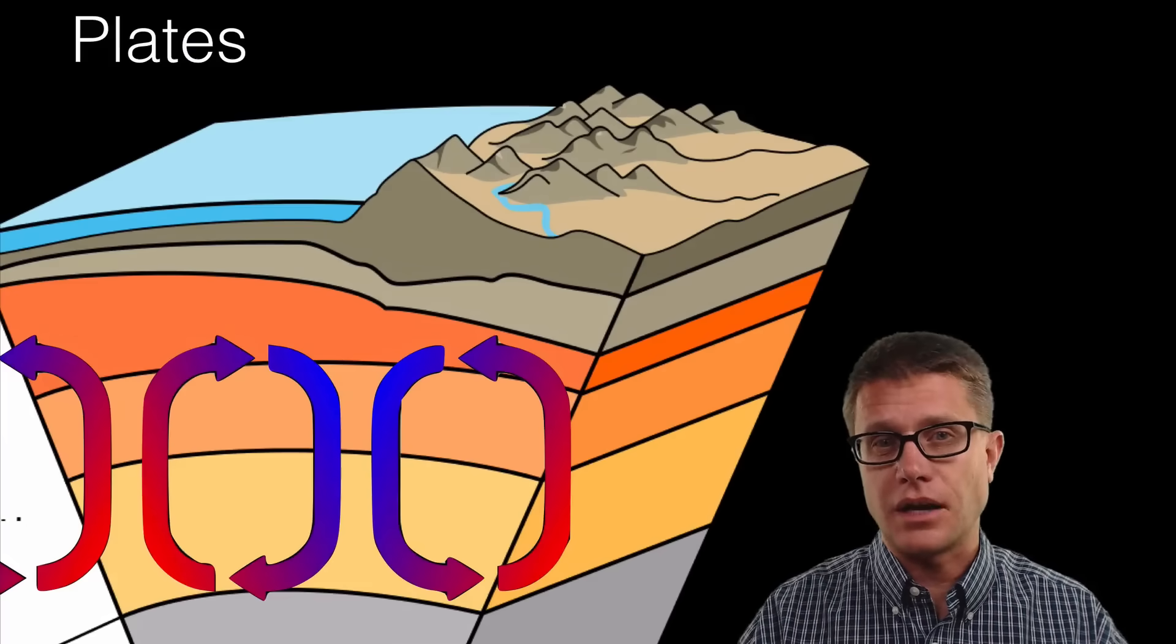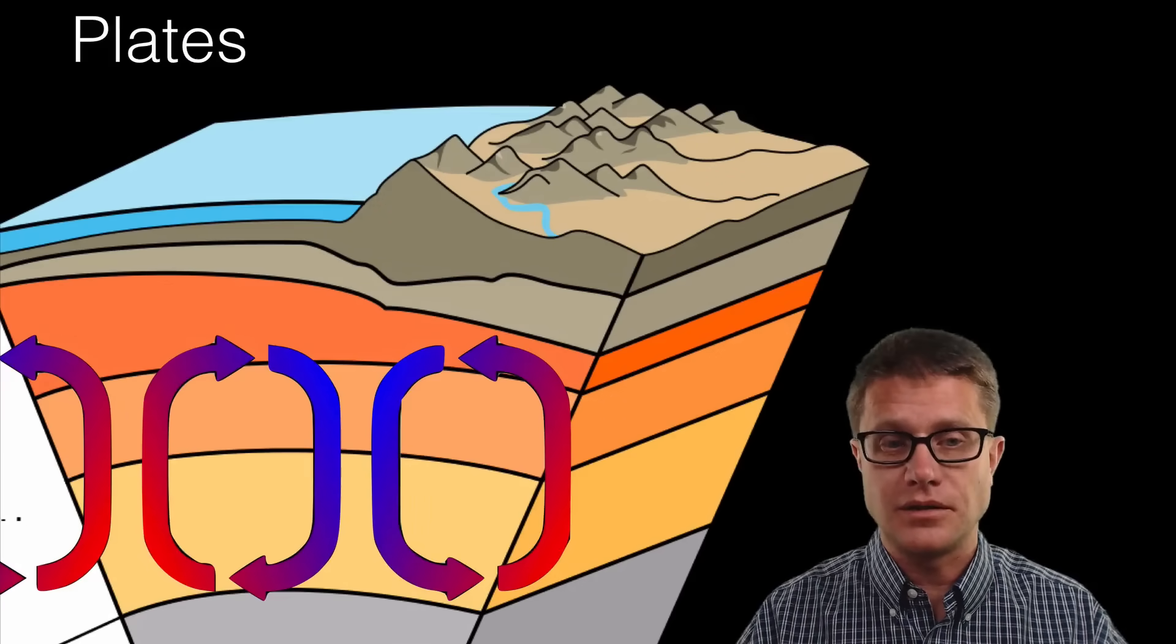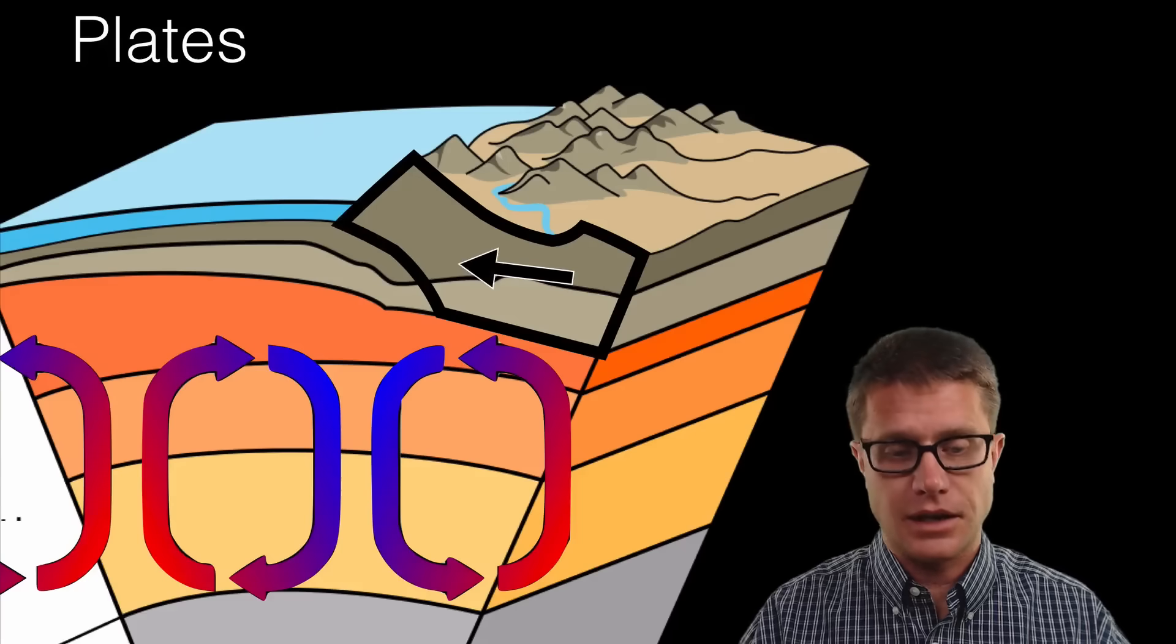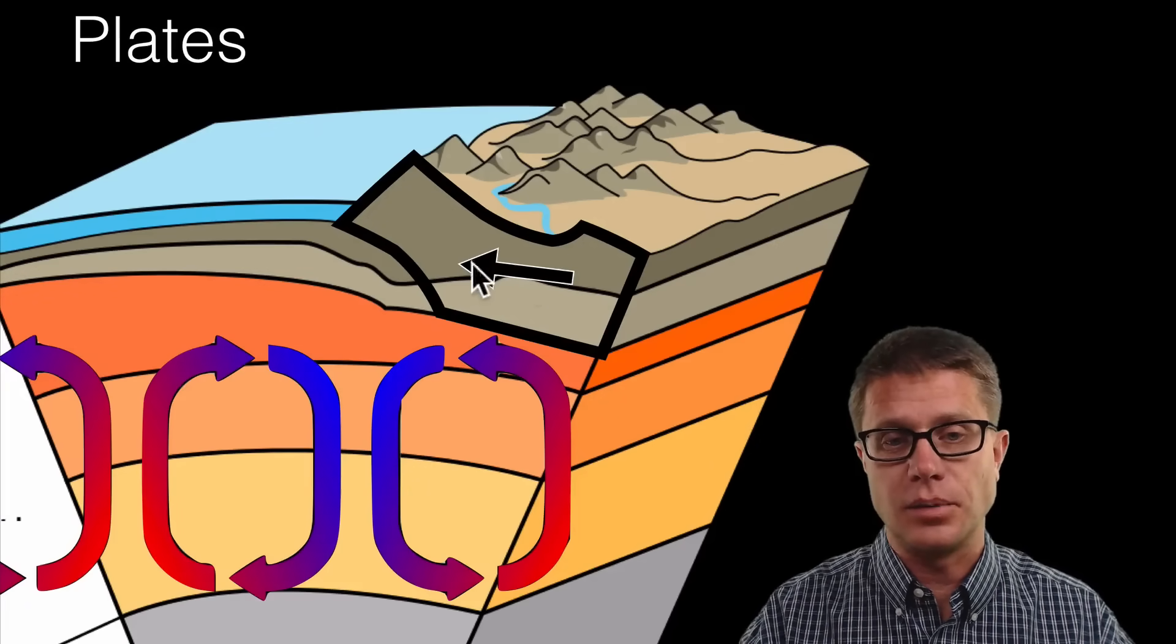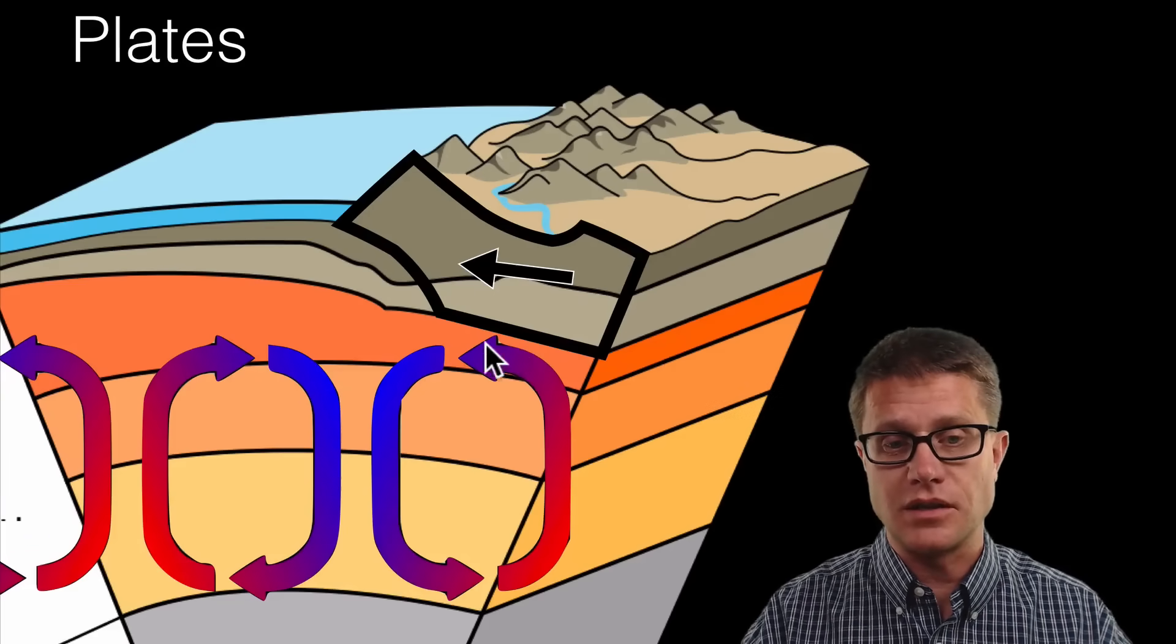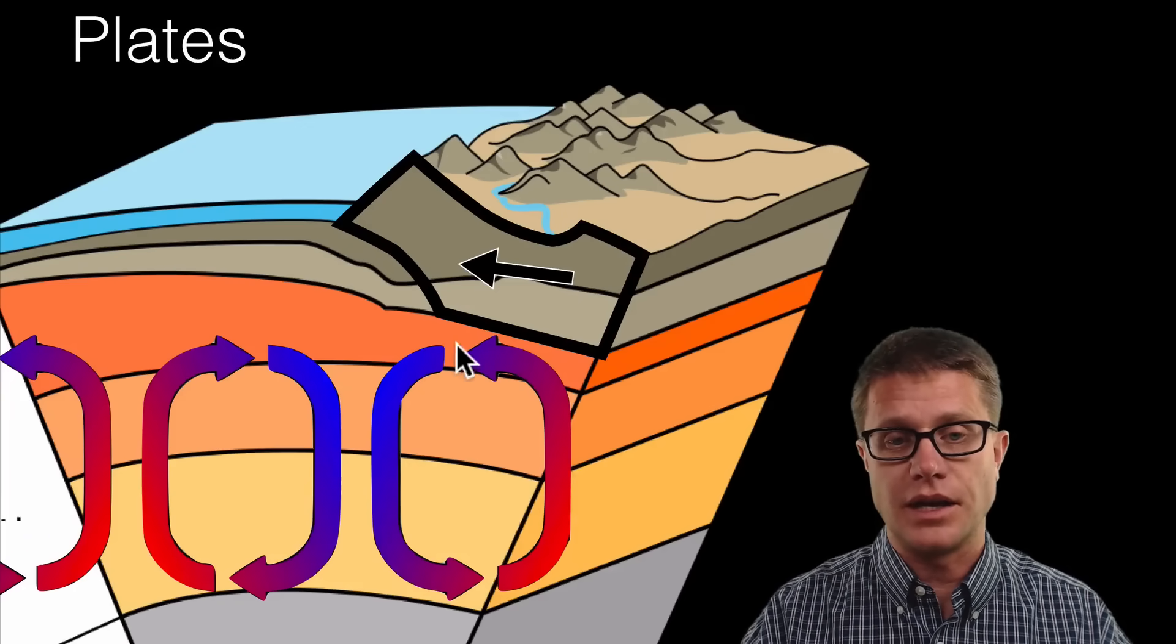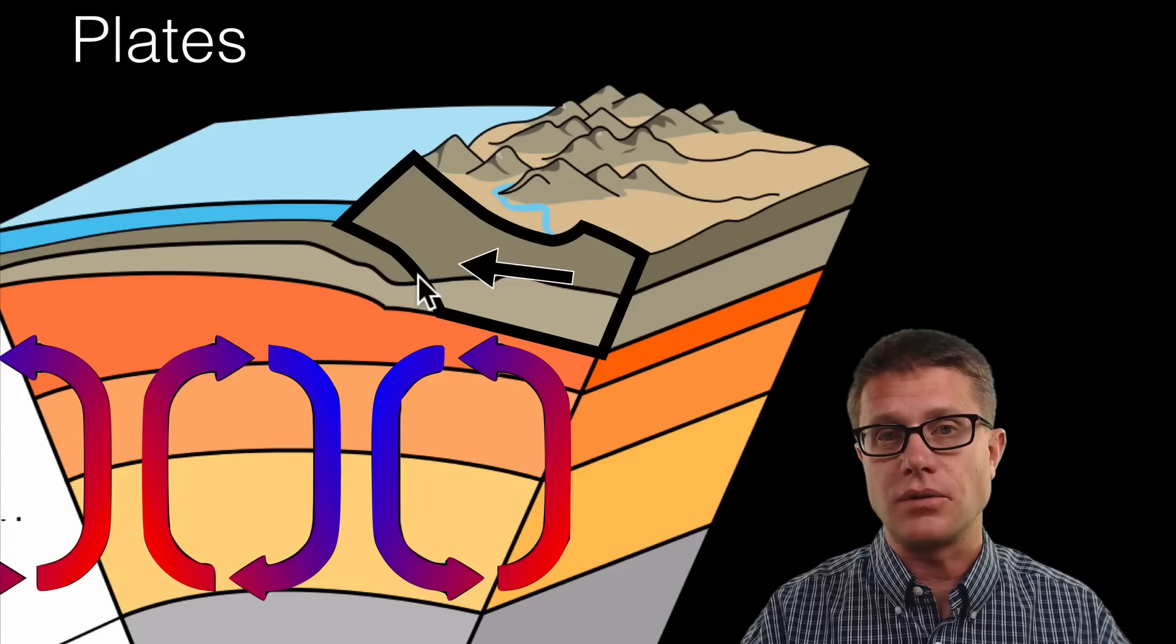And so if we look at that crust it is actually made up of plates. And so if I trace out a plate like this, this would be a continental plate. And so it is being pushed to the left. And the reason why it is being pushed is because of this convection current is moving like that. It is forcing the plate in that direction.